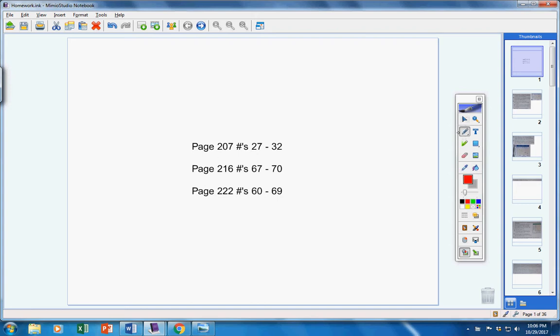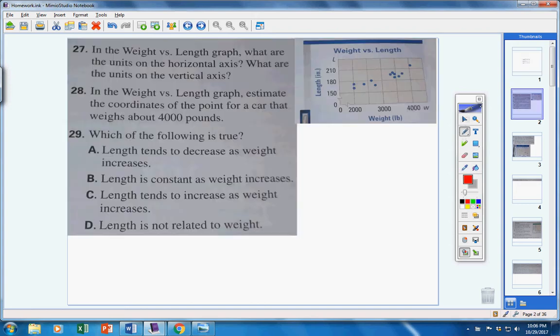Welcome as Bromond Students to the homework video. Let's jump right into this. Numbers 27, 28, and 29 are referring to this scatter plot over here.